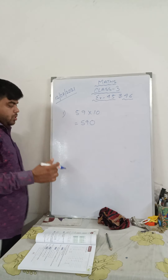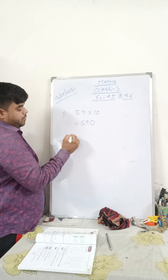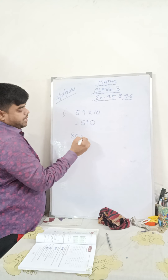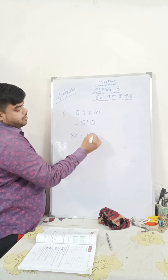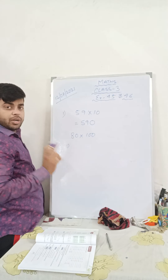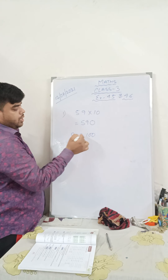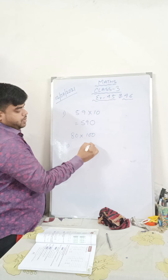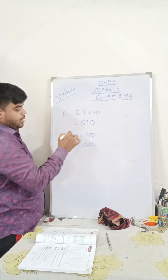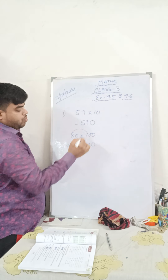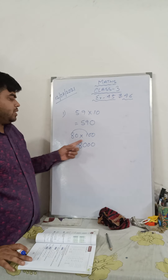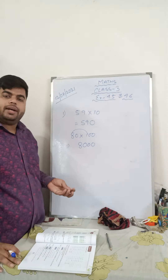Suppose they give you 80 multiplied by 100. Very simple — just count the number of zeros: 1, 2, 3. Put 3 zeros. After that, 8 into 1 is 8. So the answer is 8000. The multiplication of the zeros is already done.